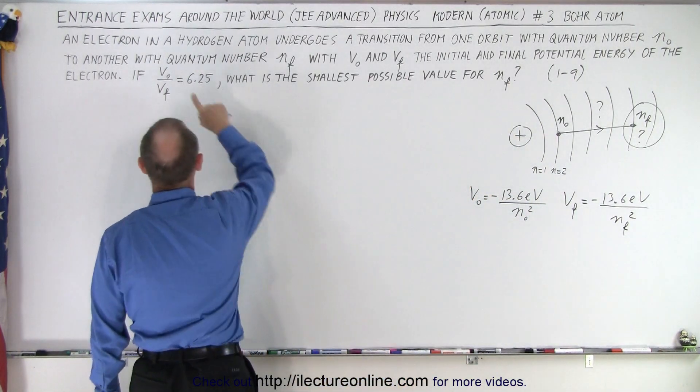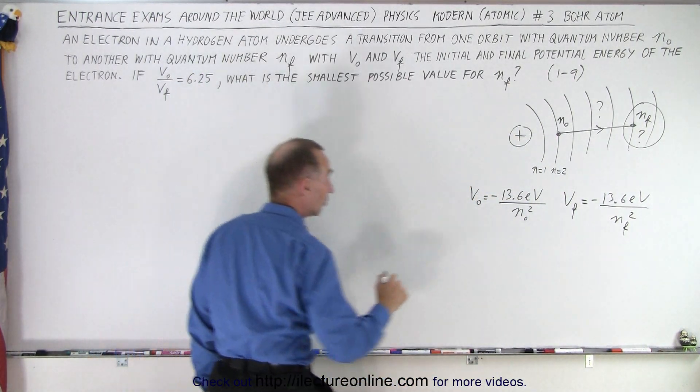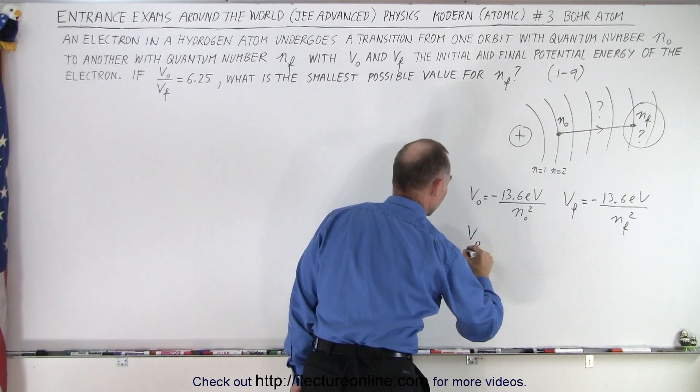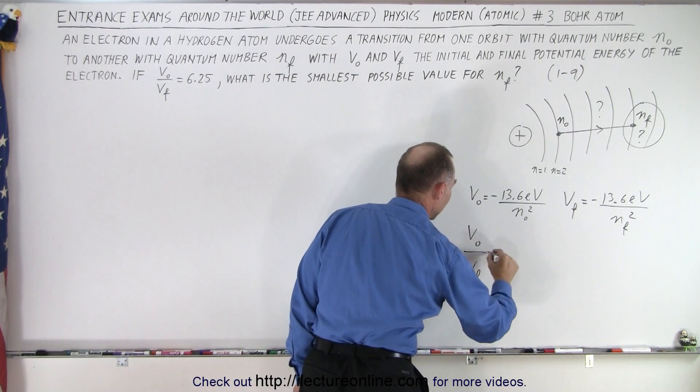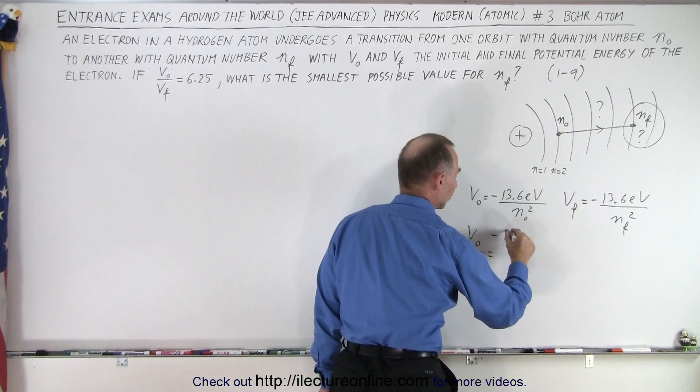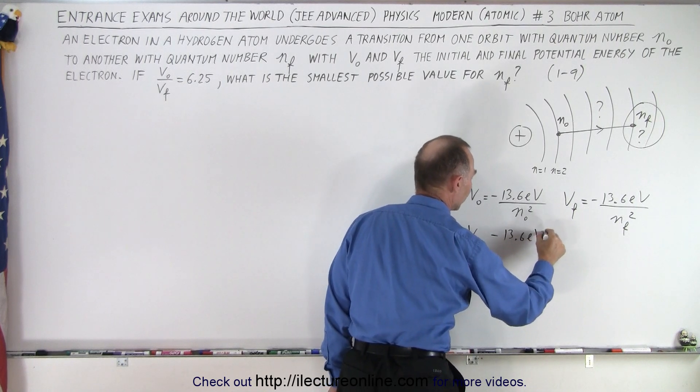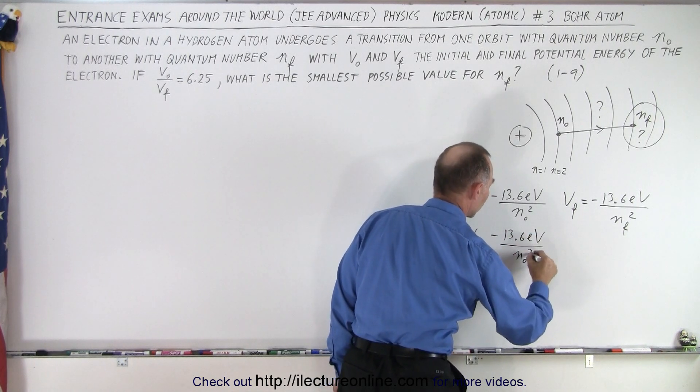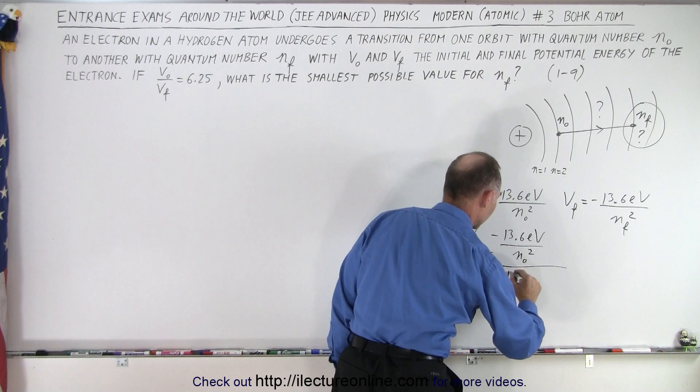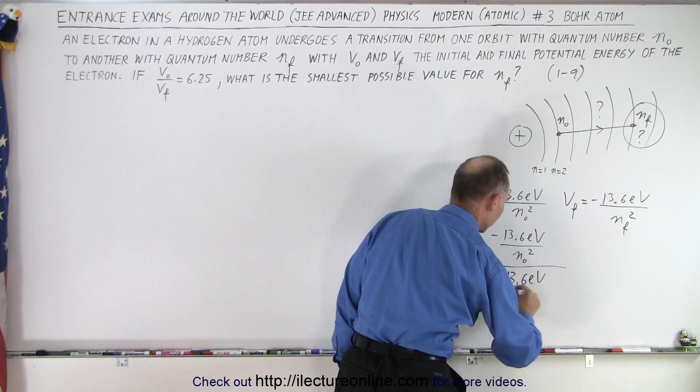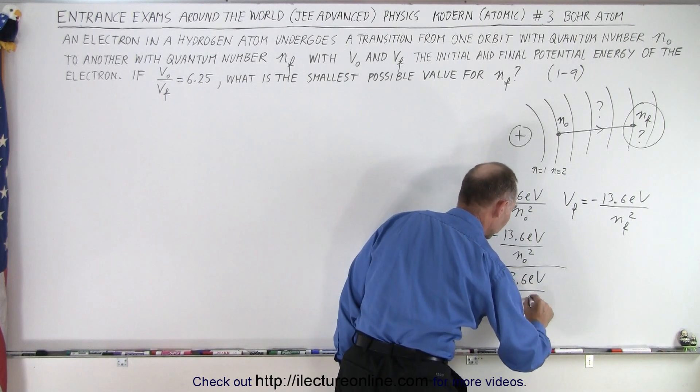And they do tell us the ratio of V_initial to V_final is equal to this. So V_initial divided by V_final is equal to minus 13.6 electron volts divided by n_initial squared divided by minus 13.6 electron volts divided by n_final squared.